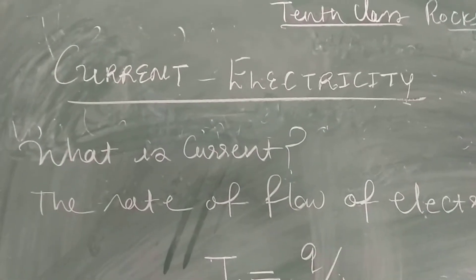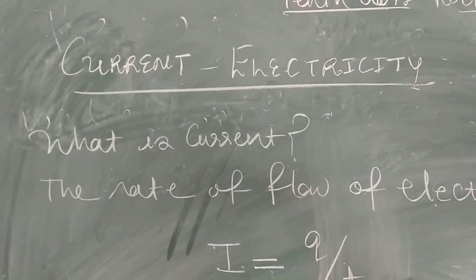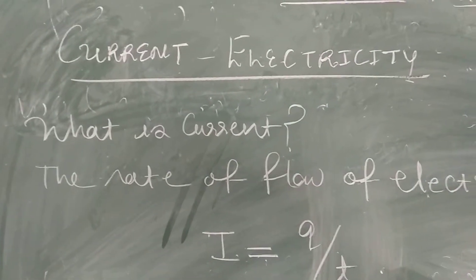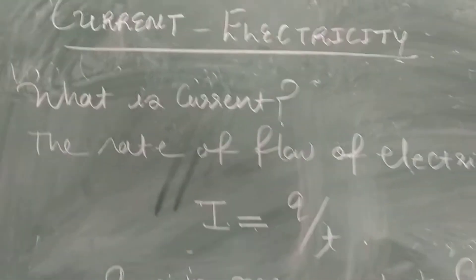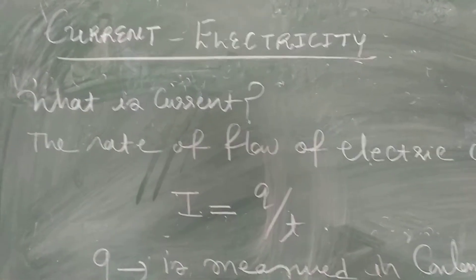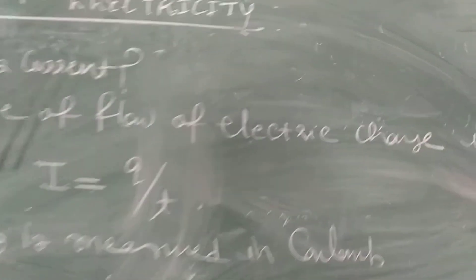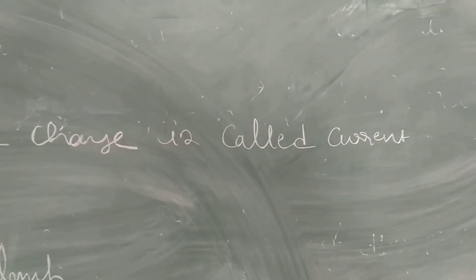Current electricity. The first concept is: what is current? The rate of flow of electric charge is called current.